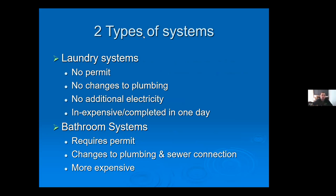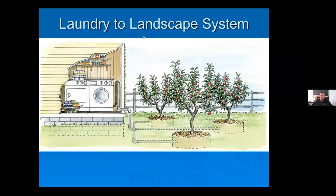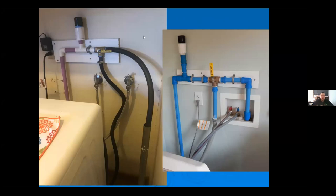There are two basic types of systems: your laundry system and your bathroom or whole-house system. Laundry machines don't require permits because you're not actually changing the plumbing in your home — you're just changing the outlet pipe from the back of the machine. Bathroom systems require quite a bit more plumbing changes and therefore do require permits. Here's a basic schematic of a laundry-to-landscape system showing the indoor plumbing section and the exterior irrigation component.